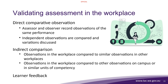If you have independent observers observing different tasks, what you're getting is not so much validation evidence but evidence of transfer — this would be used in a validation activity rather than normal assessment. An indirect comparison looks at observations made in the workplace and compares them with similar observations made in other workplaces, on campus, or in similar units of competency, looking for inconsistencies. If there are wild differences between what is seen and reported in the workplace versus other activities, that raises a flag to investigate where the variability is coming from. Learner feedback is also important.